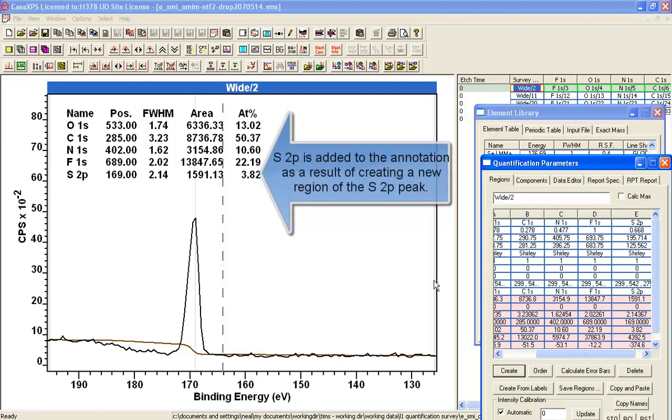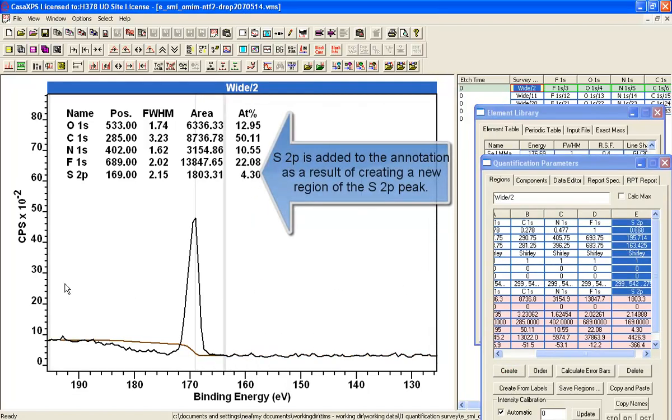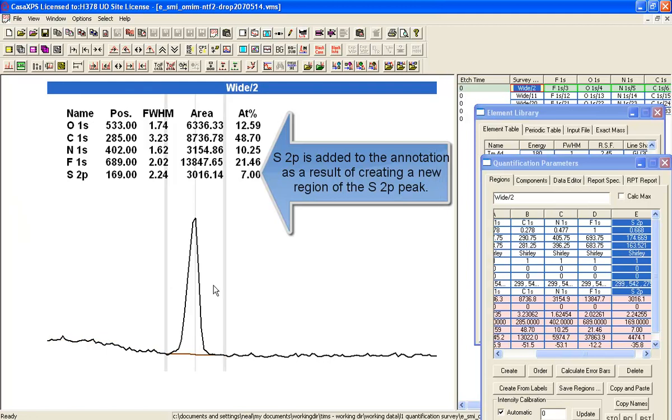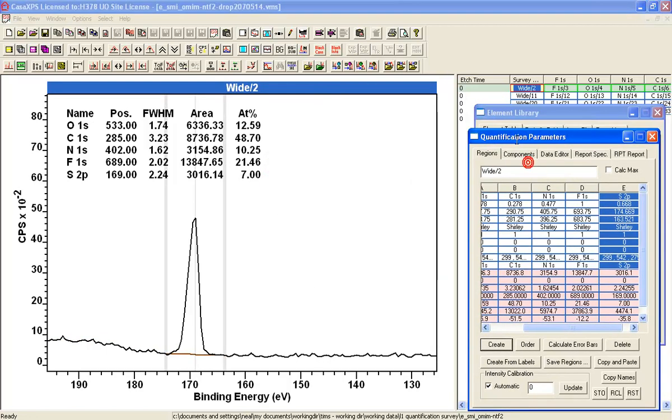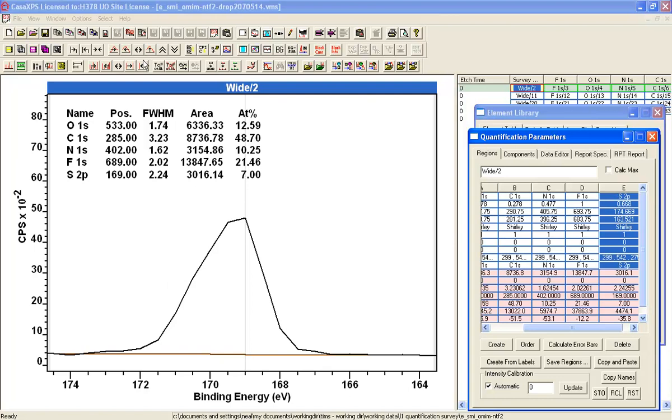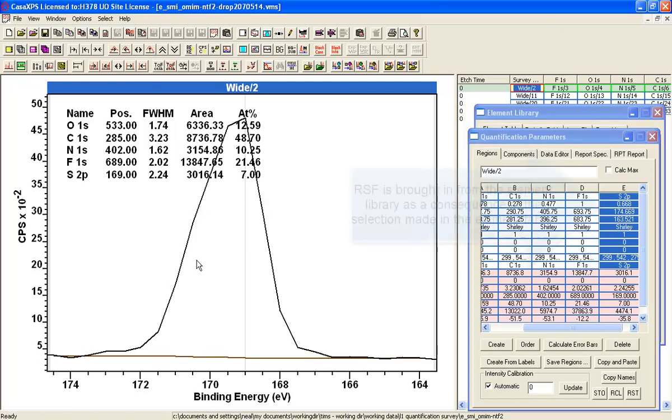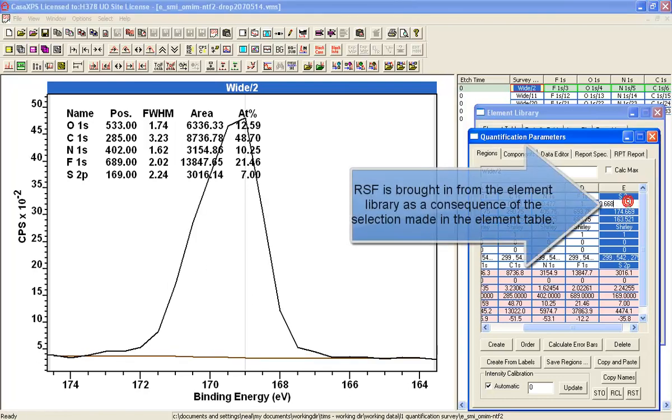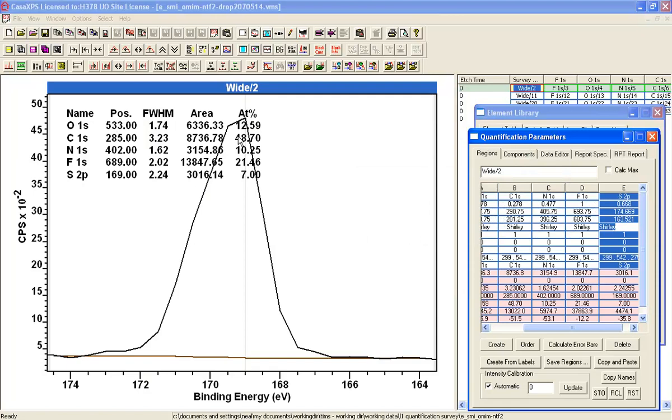We'll create a region and the region is based on the display limits. So I need to just adjust so that I've got a region that is the peak itself. And you'll see the sensitivity factor is the same. It's got a Shirley background. That was the last one used. And we now see that it's added to the table. And I've got a quantification based on the regions as created so far.